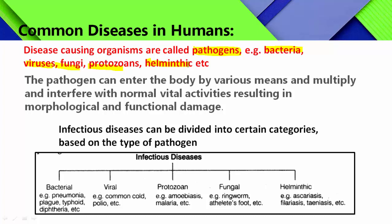This is the main part of the chapter that you need to remember very clearly. Infectious diseases, based on the pathogen that causes them, are classified into the following types: bacterial diseases and viral diseases — along with other categories we will cover.